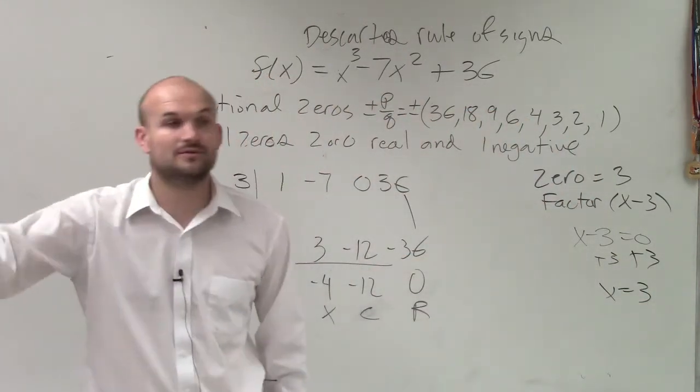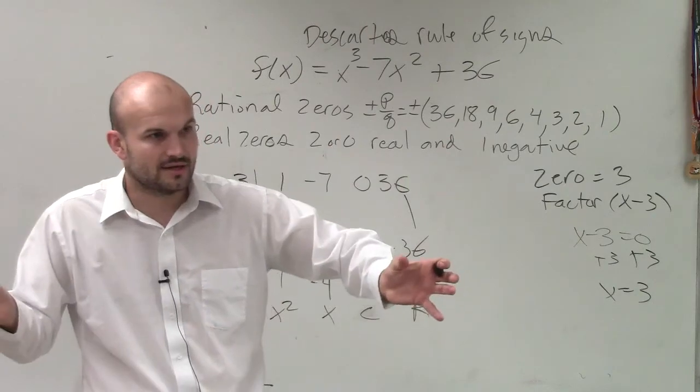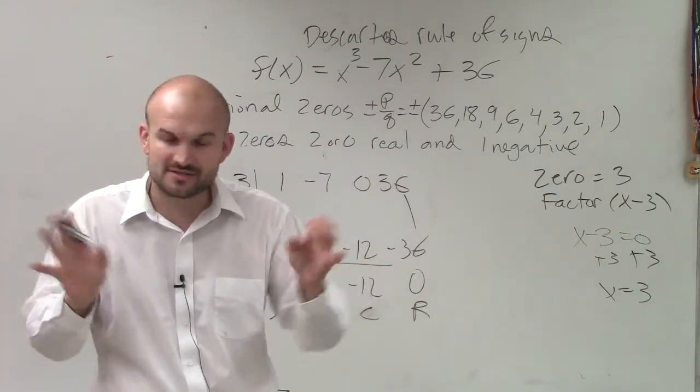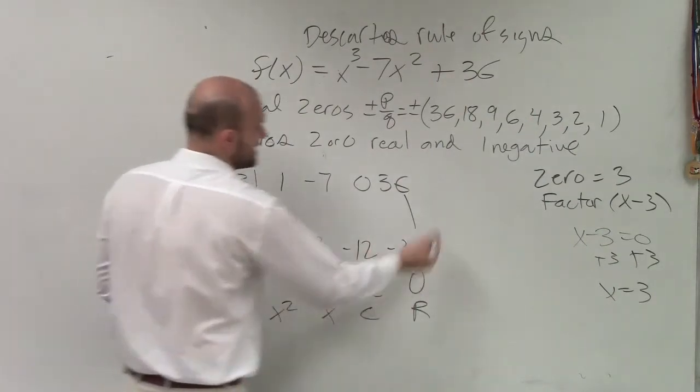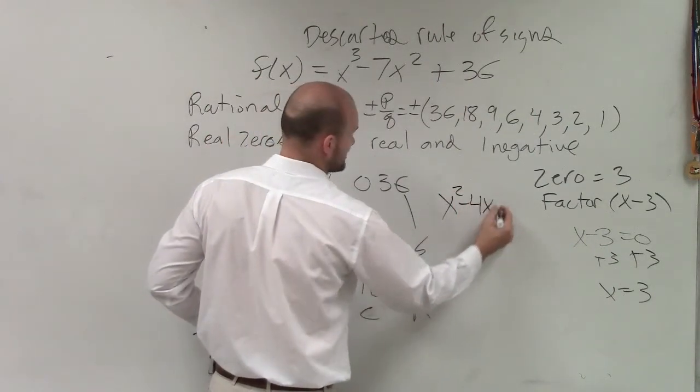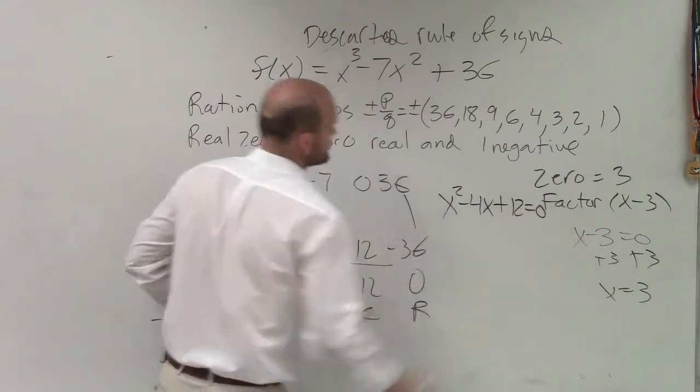You take factors, you set them equal to 0. Because remember, your factors, when we're trying to find our zeros, we factor it down, set them equal to 0. Zero product property. Set them equal to 0. So therefore, I can take my factor, X squared minus 4X plus 12 equals 0.